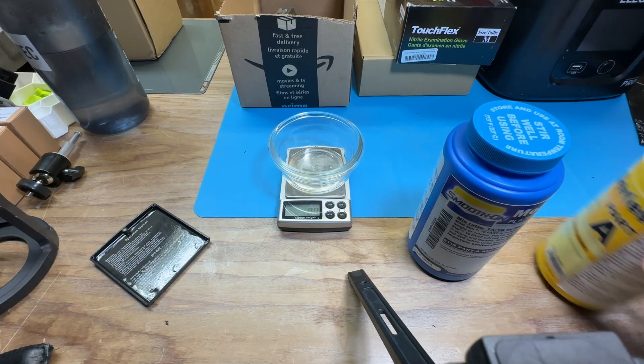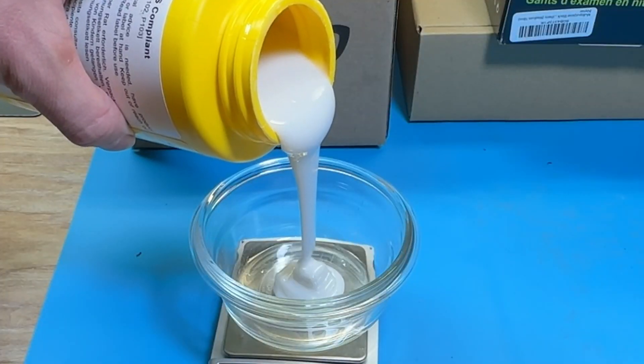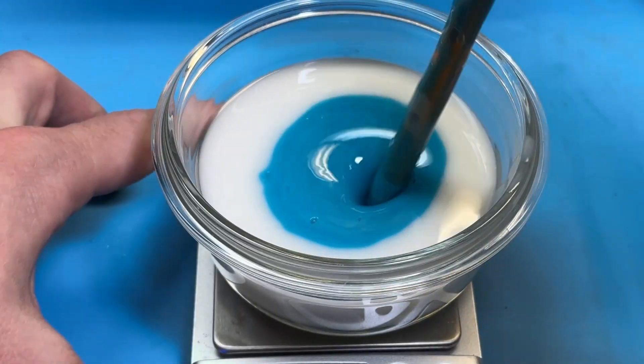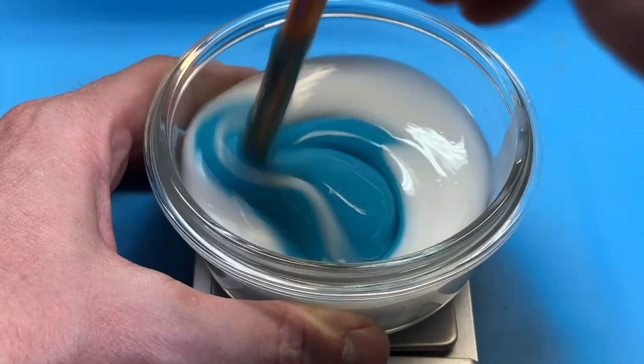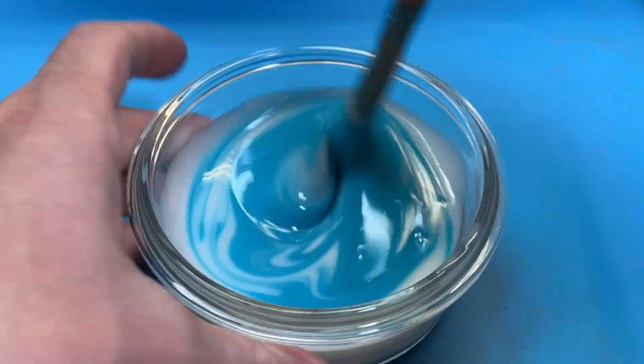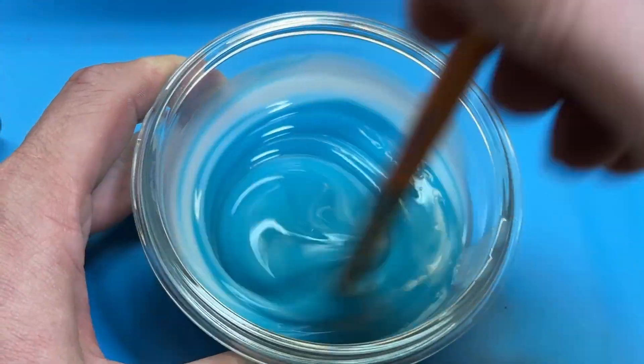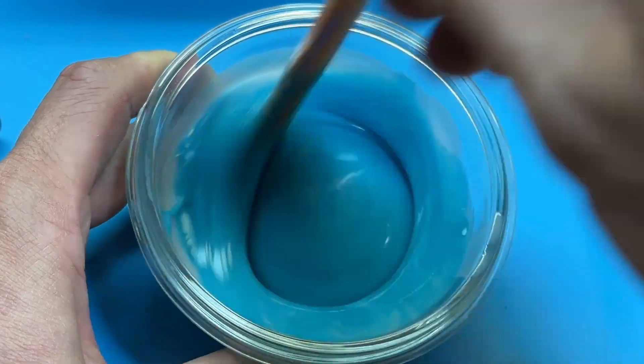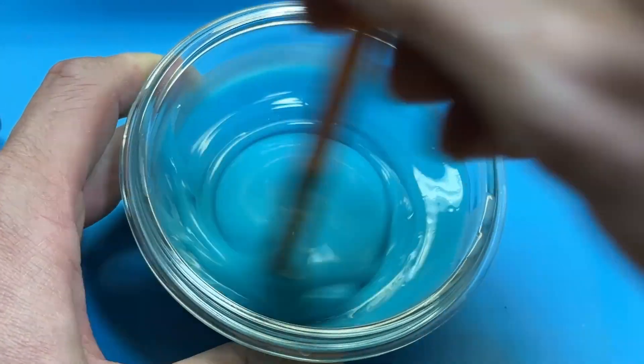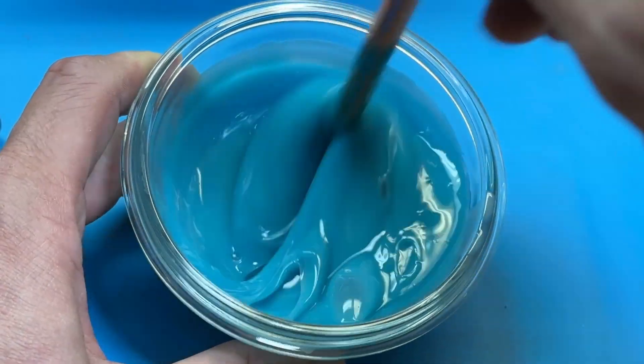After that I mixed up some Moldstar 16, it's the fast variant which means it has a 6 minute pot life and a 30 minute cure time. You can mix this either 1 to 1 by weight or by volume. Here I decided to weigh it, I just find it a little bit easier when I don't have measuring cups. I'm trying to mix it as best as I can keeping in mind that 6 minute pot time and also trying not to introduce too many air bubbles.